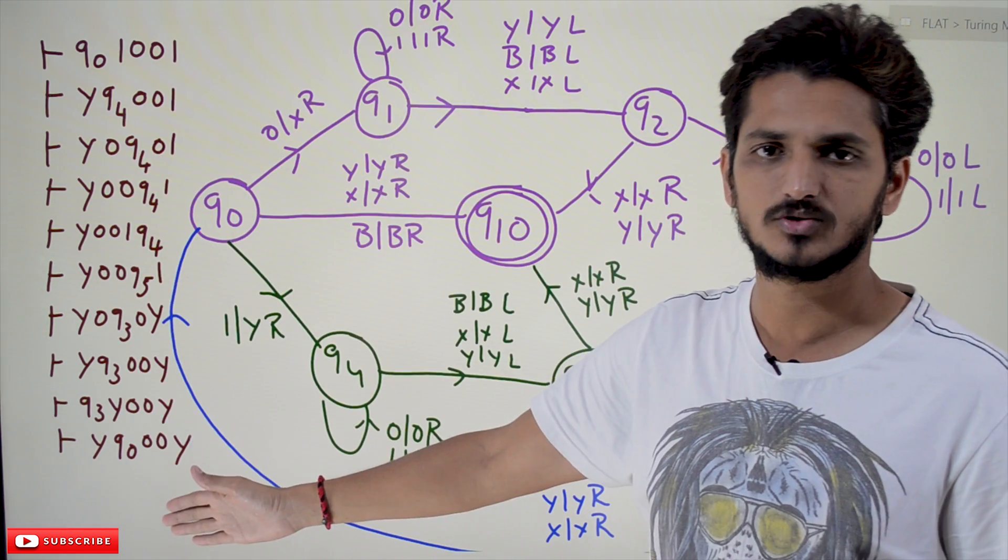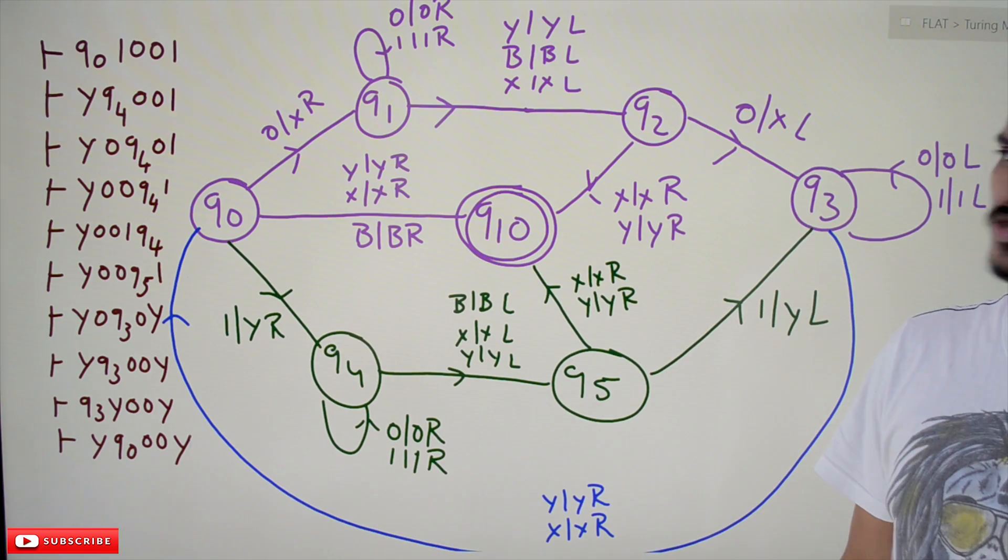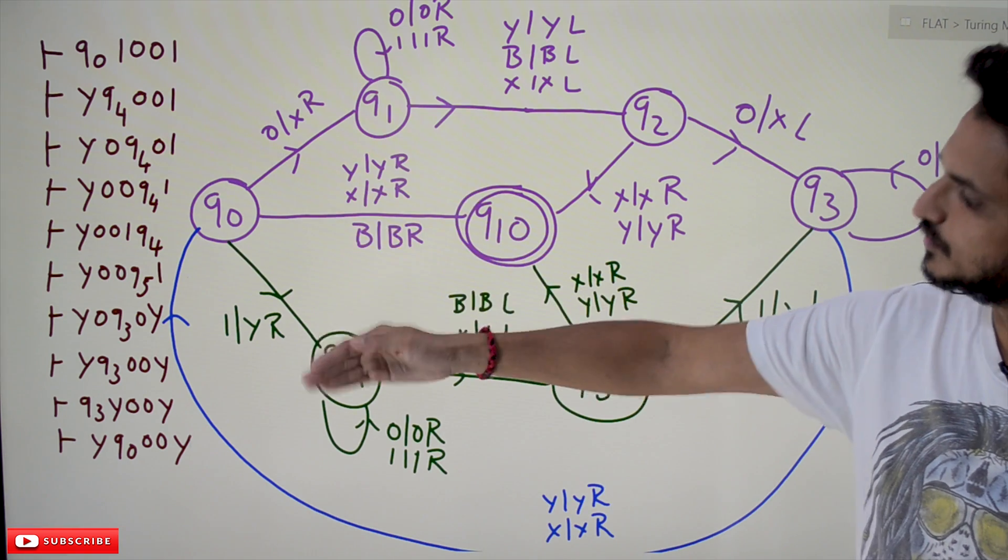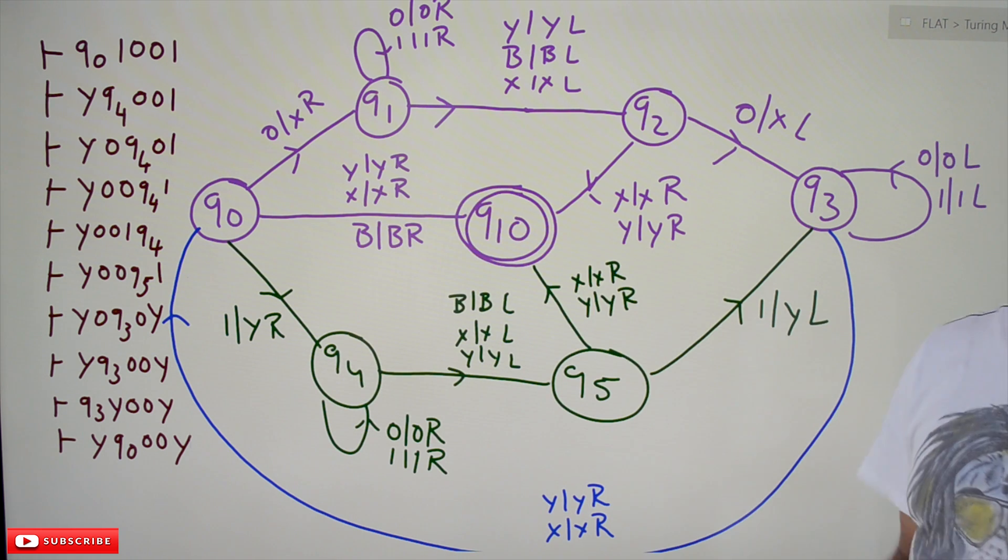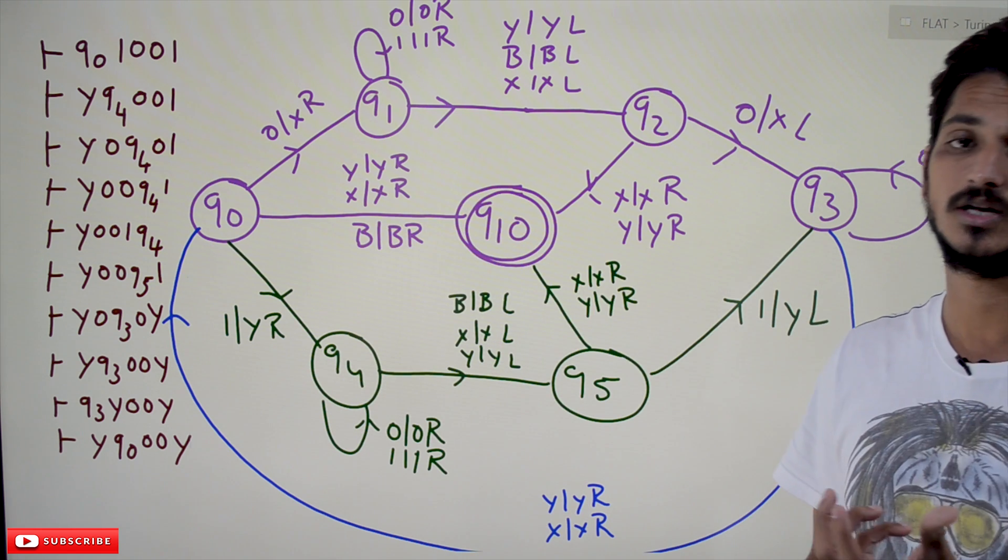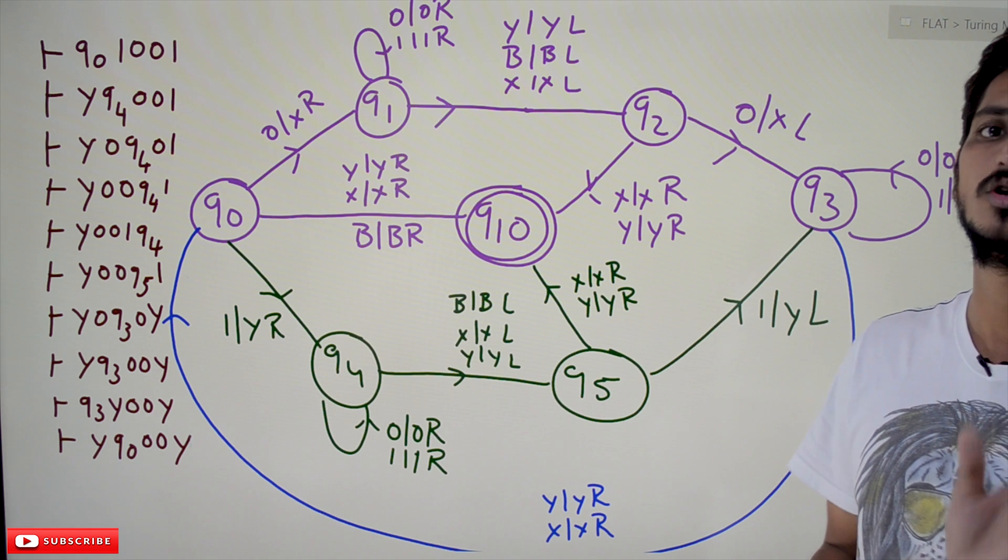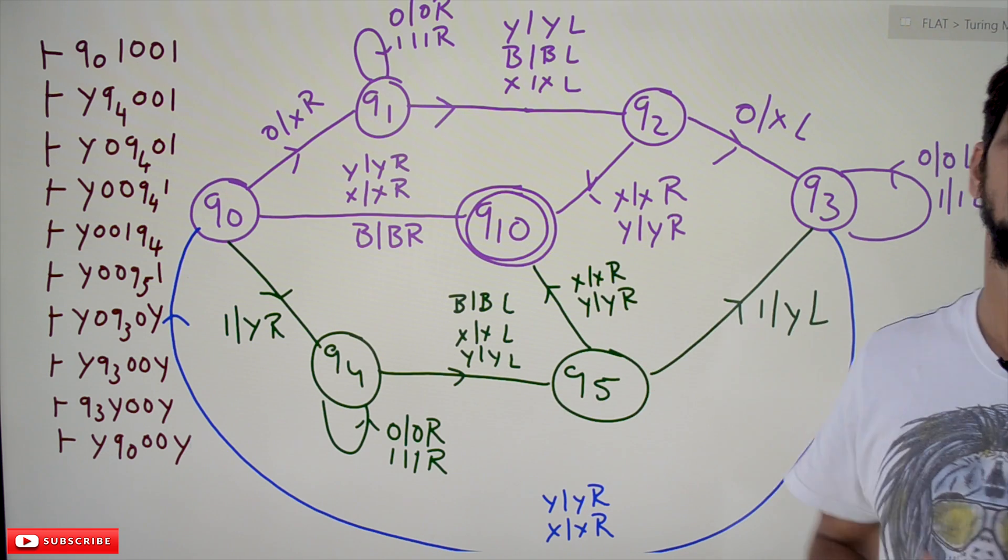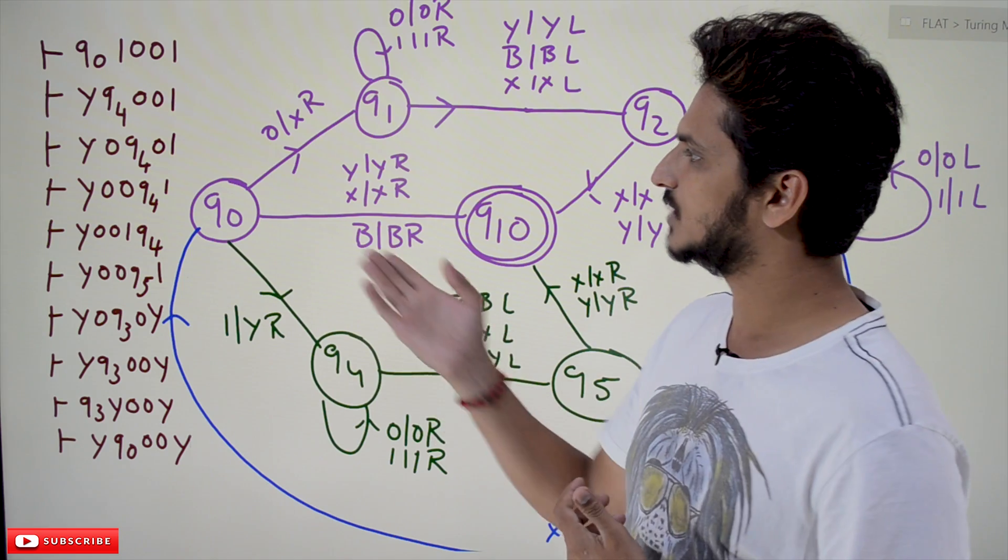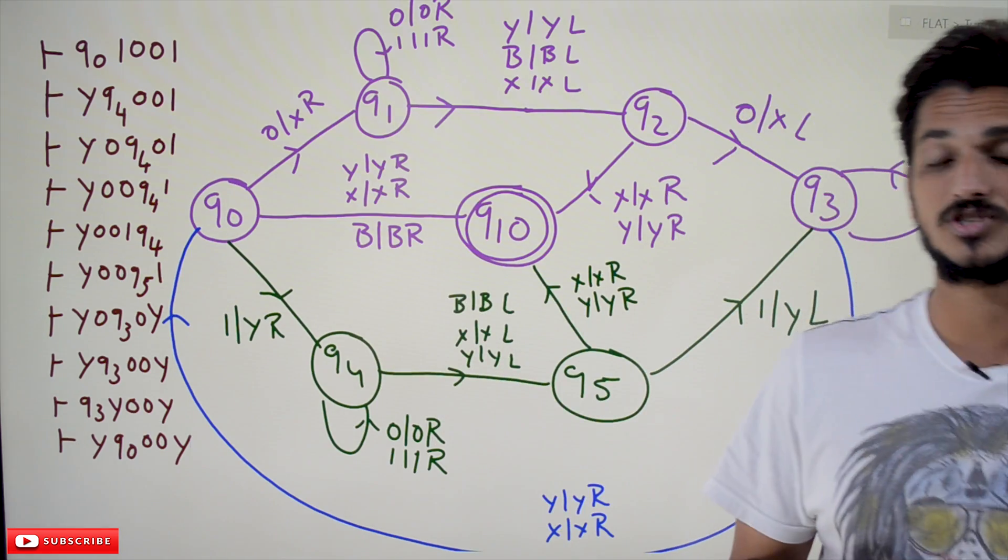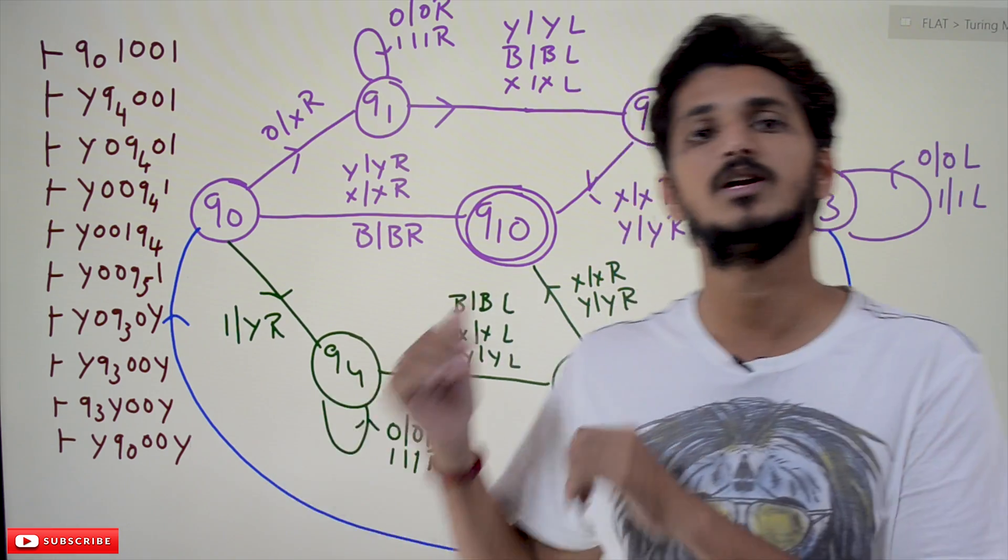Because of lack of space, we are not showing the complete instantaneous description. You keep doing the remaining part and you will end up with Q10. When you end in the last instantaneous description with Q10, it means accepted. That's how we will show in the exam's instantaneous description for representing that the given string is accepted or not by the given Turing machine.